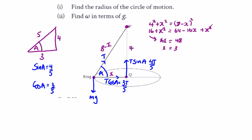First, looking at the vertical direction, we have 4T over 5 equals mg. So in terms of T, T equals 5mg over 4.